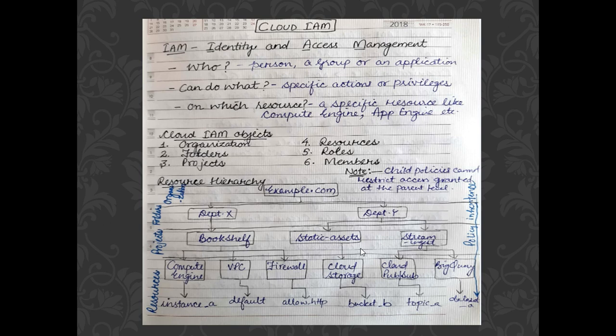IAM stands for Identity and Access Management, which basically deals with three aspects: who can do what and on which resource. 'Who' could be any person, a group of persons, or any application. 'Can do what' deals with the specific actions or privileges assigned to the 'who' part of the IAM. 'On which resource' means that specific resource, whether it's a Compute Engine or an App Engine.